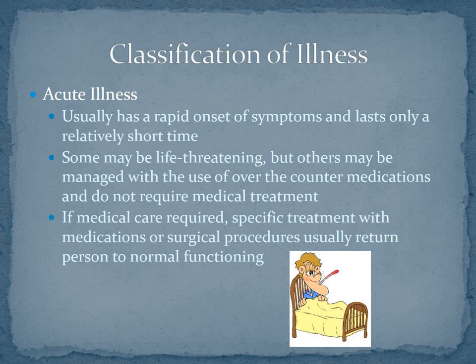There are two classifications of illness: acute illness versus chronic illness. Acute illness usually comes about from a rapid onset and is usually self-limiting — it only lasts for a short period of time. However, acute illnesses can be life-threatening. Others could be managed with medications, either prescribed or over-the-counter. An example of a life-threatening acute illness would be getting an infection and becoming septic — it came on suddenly but could kill you. Specific treatment with medications or surgical procedures usually can return a person with an acute illness back to normal functioning.